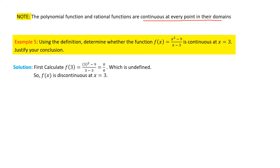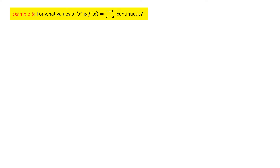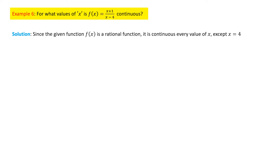Substituting x equal to 3 into the function gives 0 divided by 0, which is undefined. Since the function is undefined at x equal to 3, we conclude that f(x) is not continuous — or is discontinuous — at x equal to 3. For the next question, f(x) equals (x plus 1) over (x minus 4): since substituting x equal to 4 makes the denominator zero, the rational function is continuous everywhere except at x equal to 4.